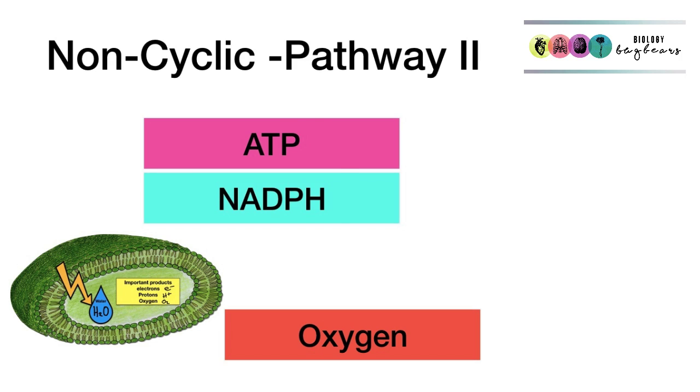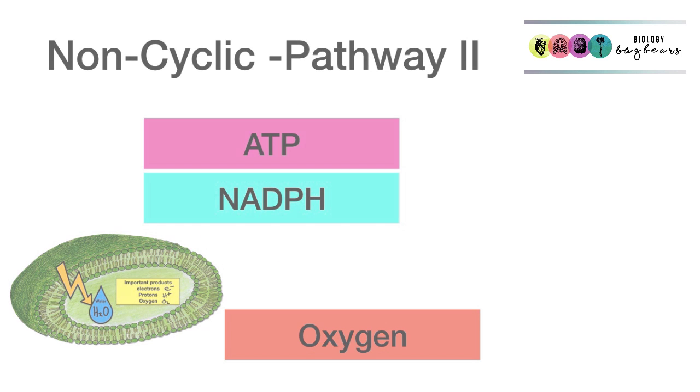The products of the non-cyclic pathway are ATP and NADPH. The oxygen was produced as a result of photolysis of water. So be very specific.